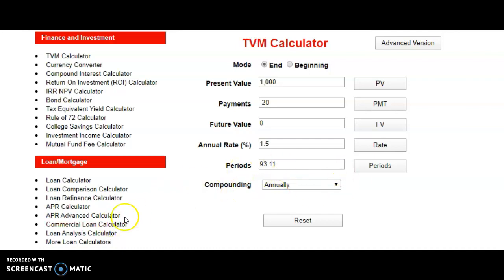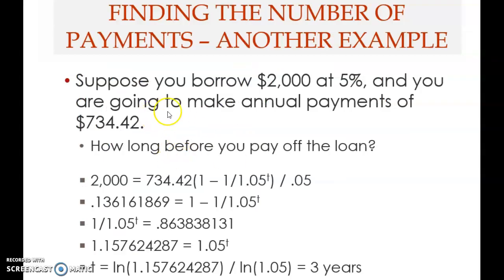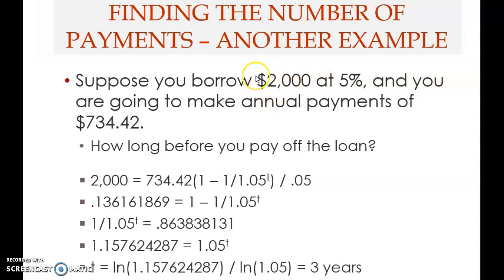Let's go back to the slides and look at another example. Suppose you borrow $2,000 at 5 percent and you are going to make annual payments of $734.42. How long before you pay off the loan? A good starting point is to identify the known elements. You borrow $2,000, so this is the present value — this is known.